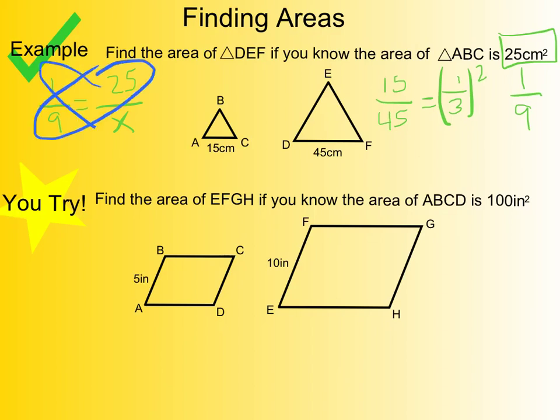We get x equals 225, and the units are centimeters squared. So the area of the larger triangle is 225 centimeters squared. Go ahead and try that next problem.